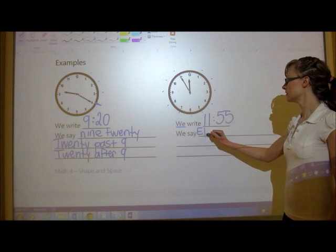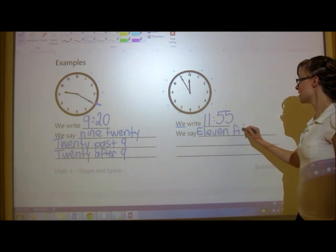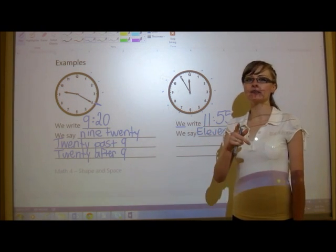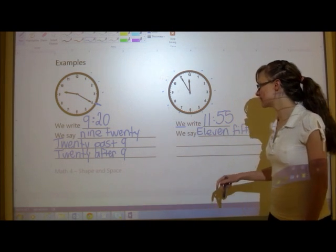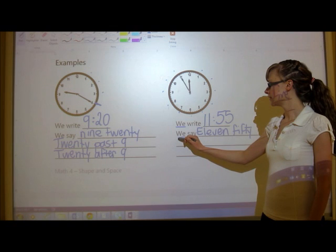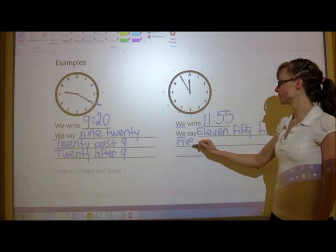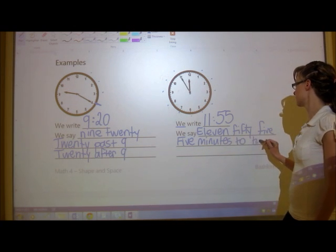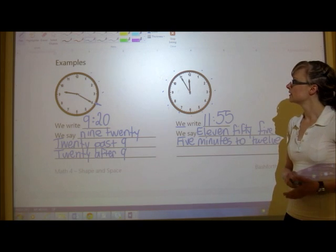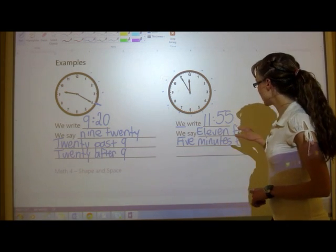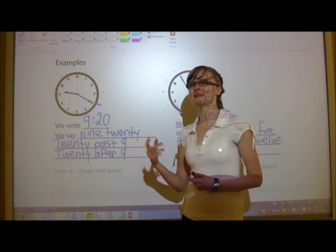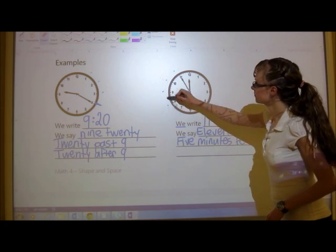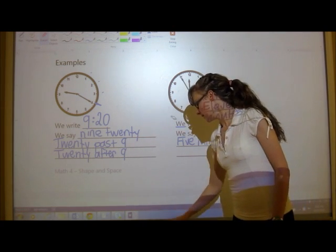Ways to say this are 11, 55. You could also say... there's only two ways to say this one. Or you could say 5 minutes to 12. There's not really another way. Because we don't have another word for to. Whereas we have past and after for the other one. They're both acceptable. And people say both of those.